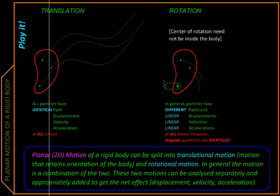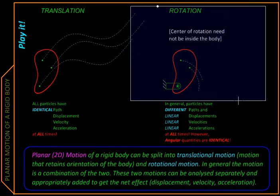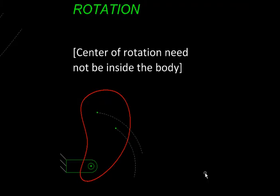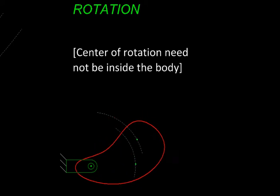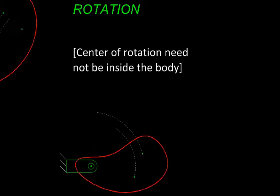Next comes rotation. In rotation, the body rotates about a point or in 3D space, an axis. And all points trace an arc of a circle, and these arcs could differ in radii.